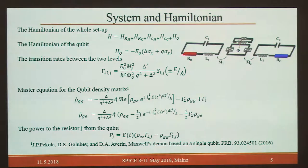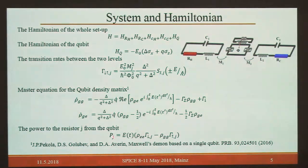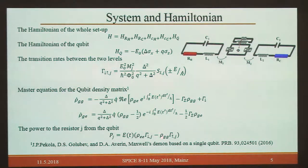Without going into too much detail: we use Fermi's golden rule for calculating the transition rates between states, and then write the master equation for the population. It is important to note there is an off-diagonal term for the density matrix. We then calculate the transmitted power from the resistors to the qubit, which depends on the instantaneous energy of the qubit and is determined by the diagonal parts of the density matrix.